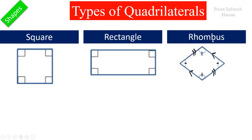Next one is a rhombus. In this shape, all four sides are equal and opposite sides are parallel. Along with that, opposite angles are equal but not right angles, so it is called a rhombus.